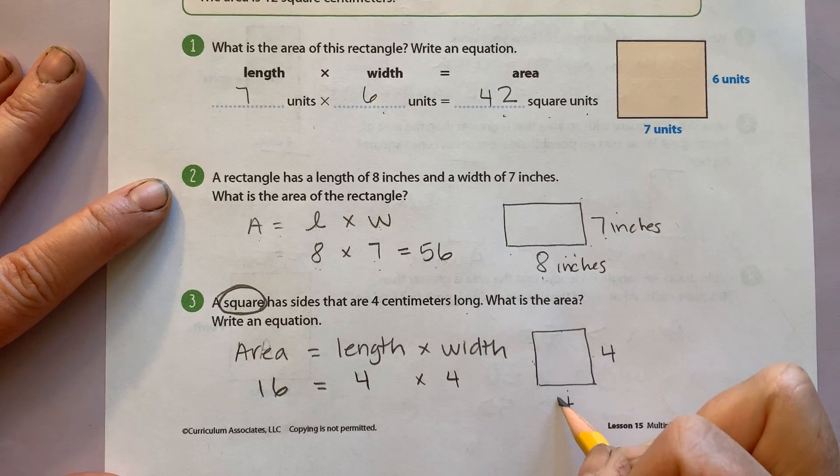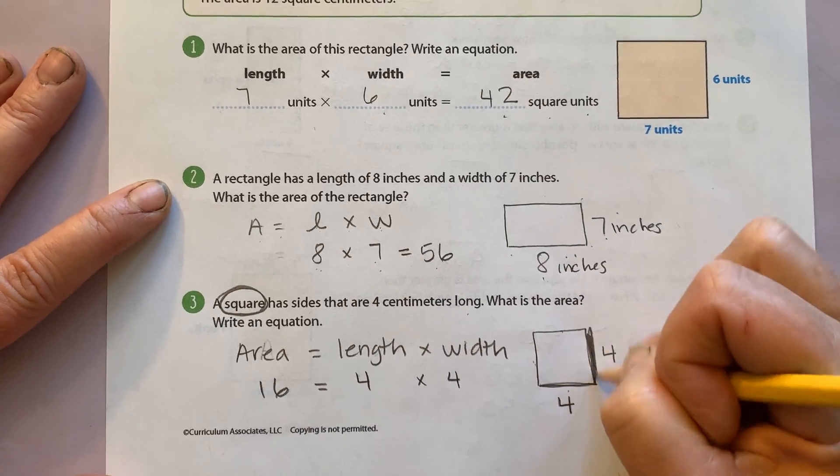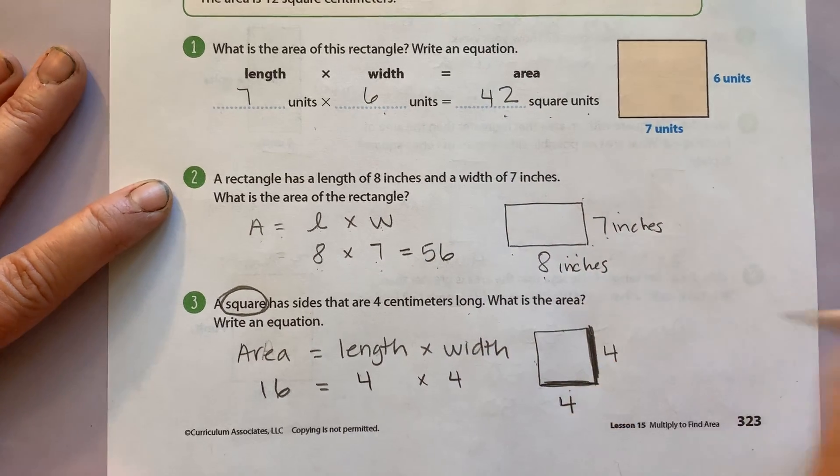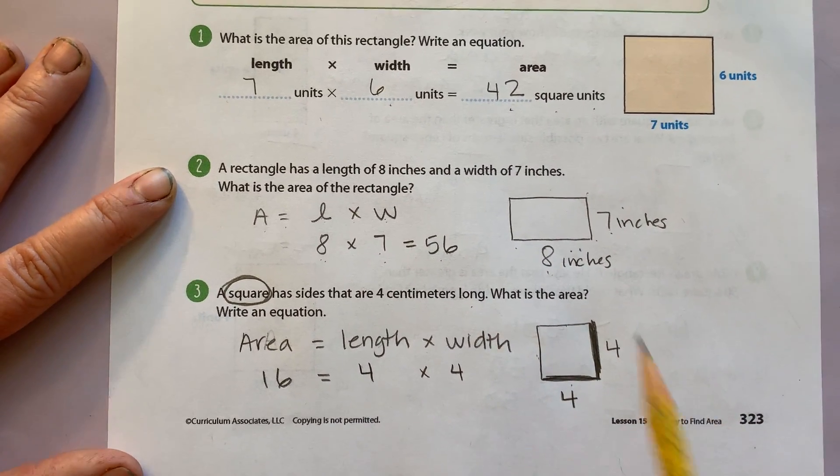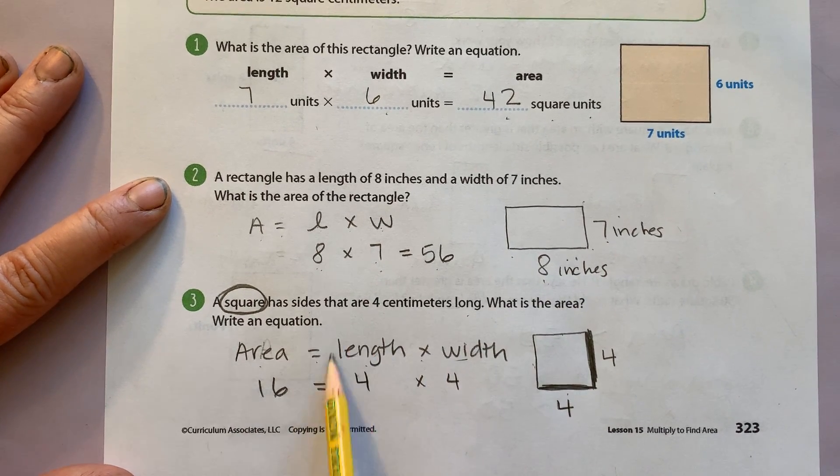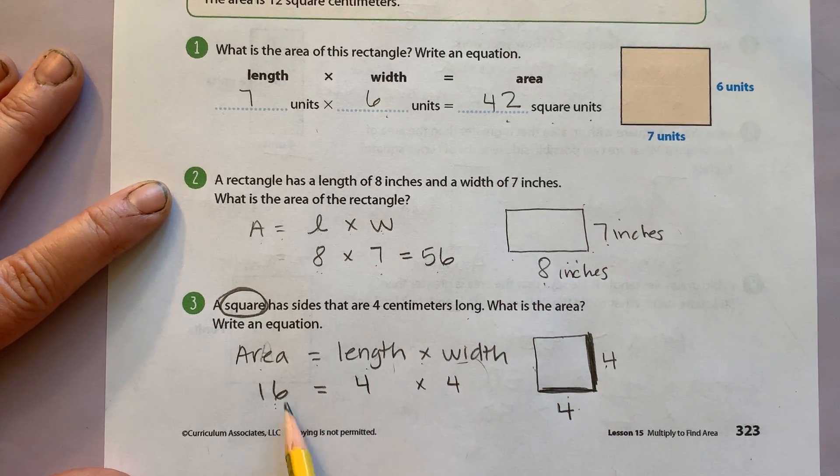So if the length is 4, then I also know that the width is 4. That's the cool thing about squares. All four sides are the same length. So area equals length times width. I substituted my length of 4, my width of 4, and I have 16.